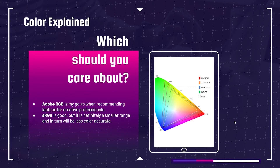Which should you care about? My go-to is Adobe RGB when recommending laptops for creative professionals. The reason is it's the most standardized at this moment. DCI-P3 is starting to make a pretty big uprising, but overall Adobe RGB is the most standardized across the board, with the most available reviews and information. sRGB is good, but it has a smaller range — colors will be more muted, more washed out, less vibrant and brilliant, so it will be less color accurate. Look for Adobe RGB as high as you can get — 100% is obviously the best.